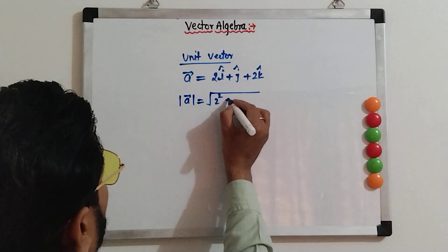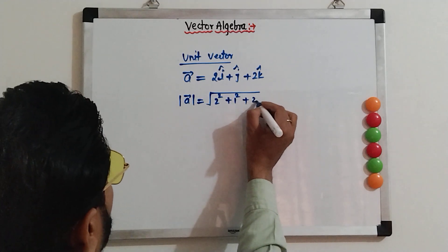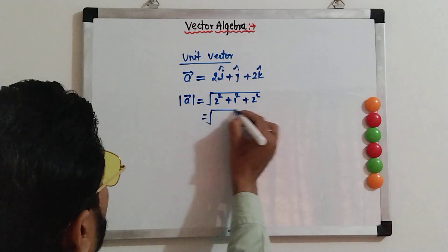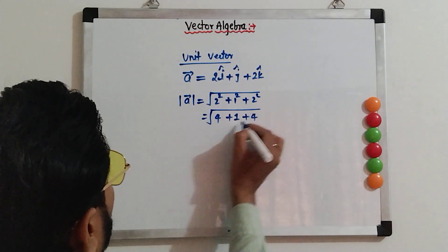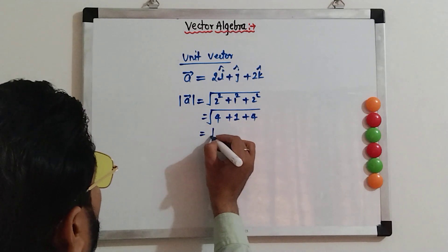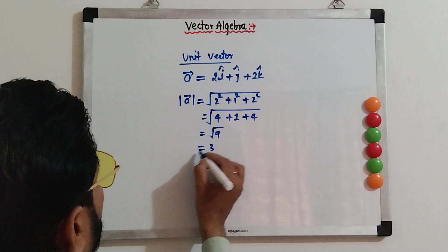2 square plus 1 square plus 2 square. So, what we get? 4 plus 1 plus 4. Under root 9. That means 3.